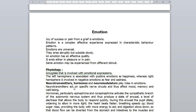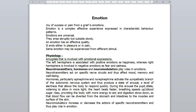Neurotransmitters act on specific nerve circuits and thus affect mood, memory and well-being. Hormones, particularly epinephrine and norepinephrine, activate the sympathetic branch of the autonomic nervous system and produce a state of arousal — a level of alertness that allows the body to respond quickly. During this arousal, the pupils dilate to allow in more light, the heartbeat quickens, breathing speeds up, blood sugar rises providing more energy, and digestion slows so blood flow can be diverted from the stomach and intestines to the muscles and skin.